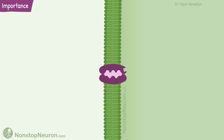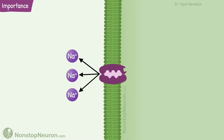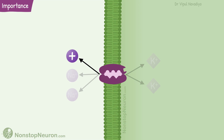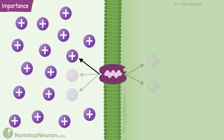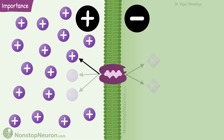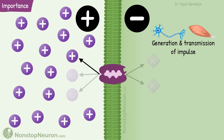The second role of the pump is the generation of electronegativity inside the cell. During each cycle of the pump, it moves three sodium out but takes only two potassium in. Thus, during each cycle, there is a net movement of one positive charge outside the cell. With repeated cycles, more positive ions move outside, making the outside of the cell electro-positive and the inside electro-negative. This electrical potential is very important for generation and transmission of impulses in excitable cells like neurons and muscle cells.